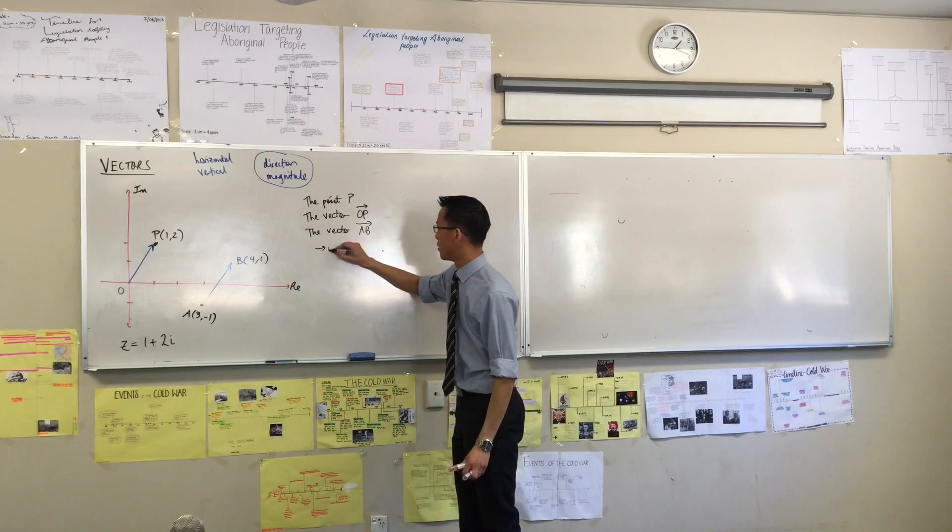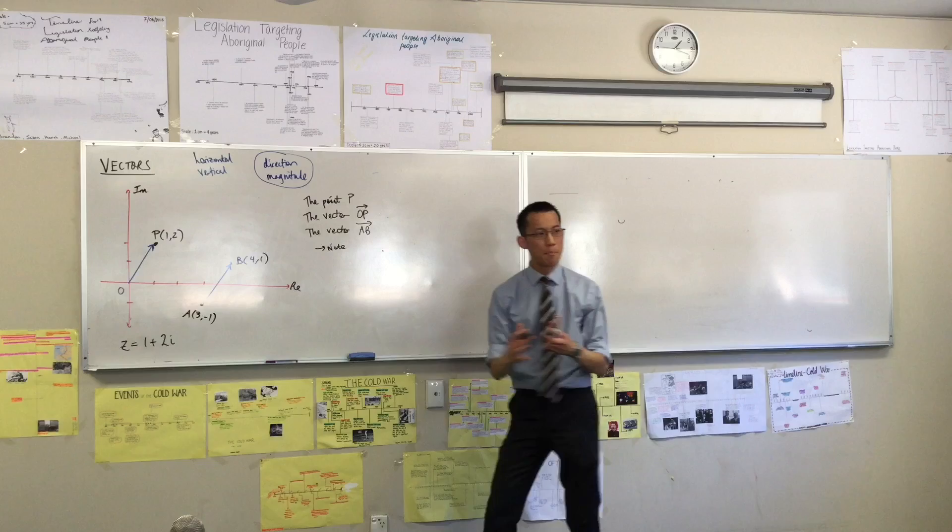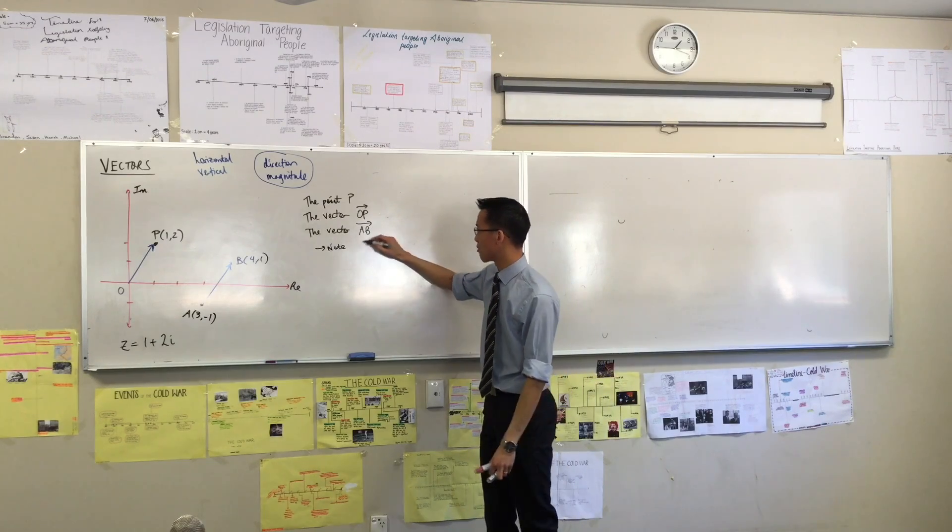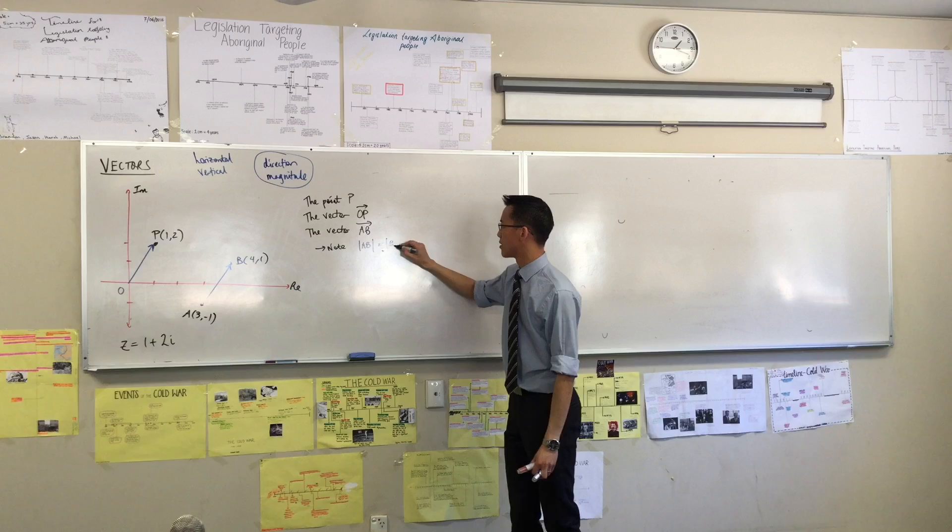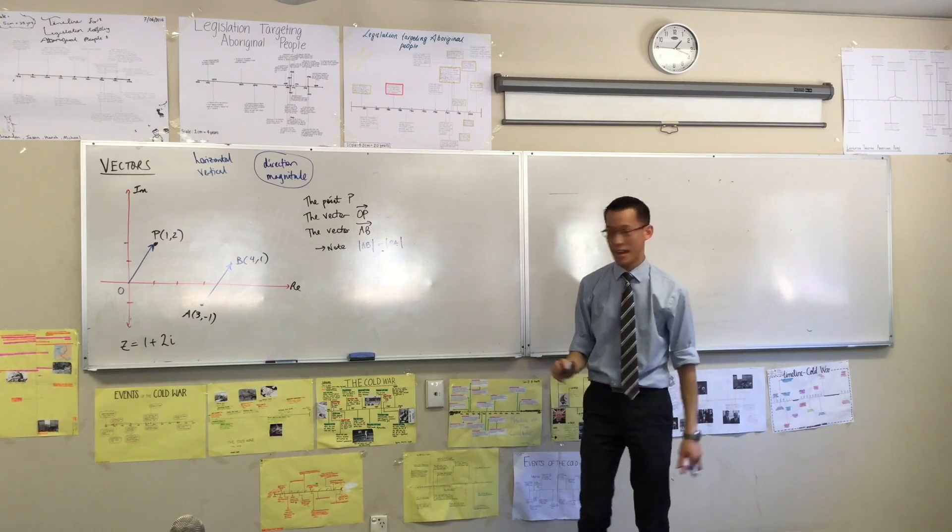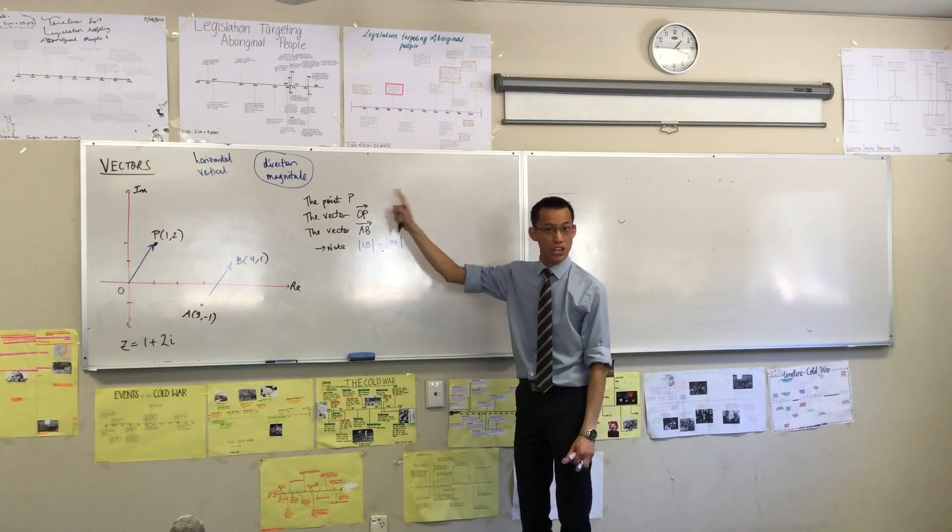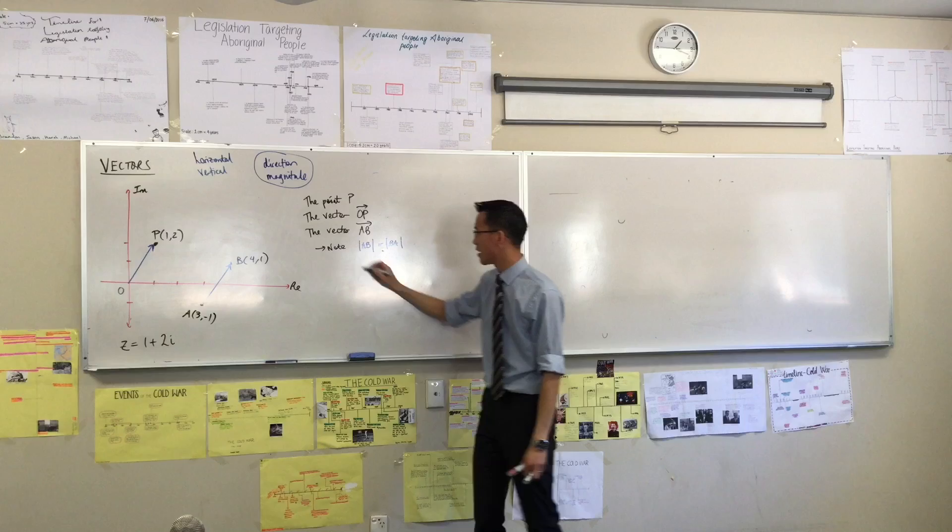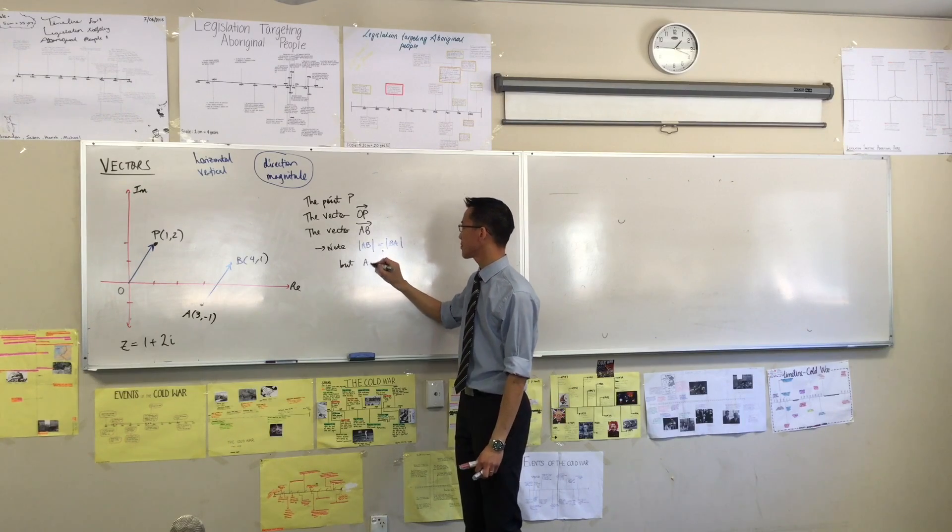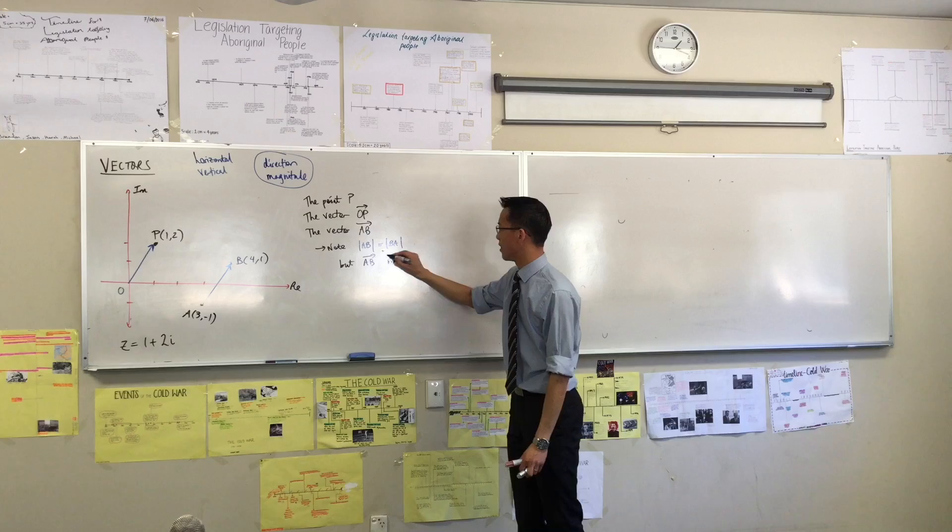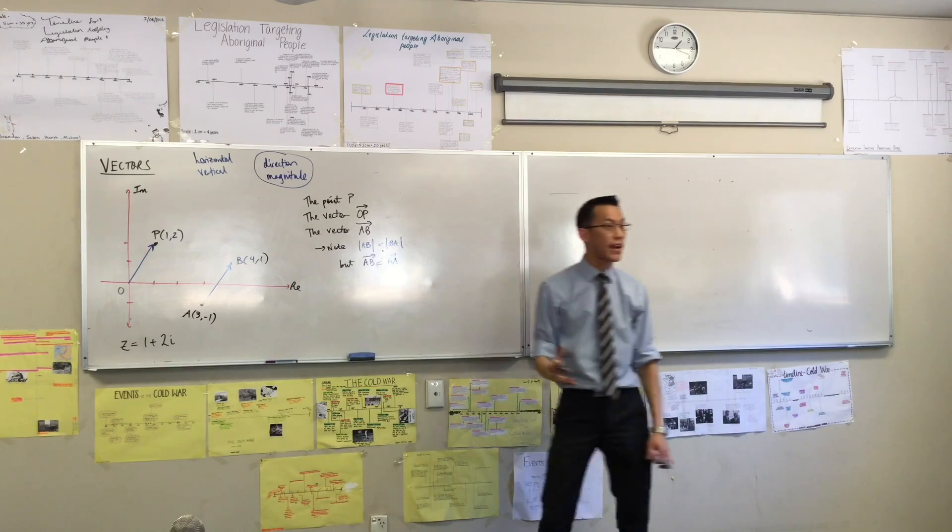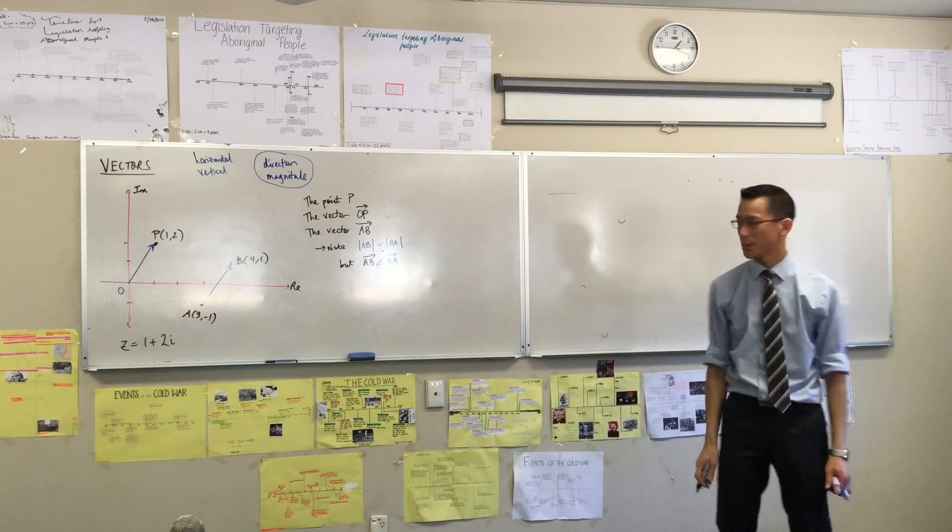So what I want you to note is, note, the magnitudes are the same. AB, BA. Those magnitudes are the same, whichever perspective you're looking at. But this vector and this vector are not the same vector. They're facing opposite directions.